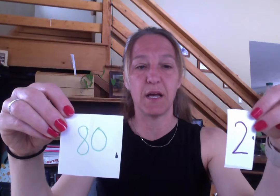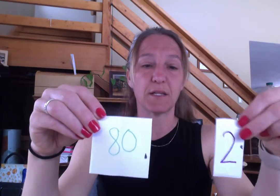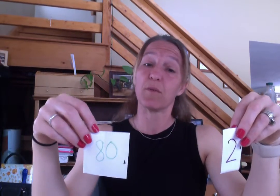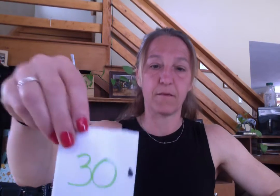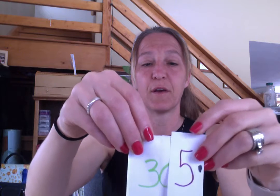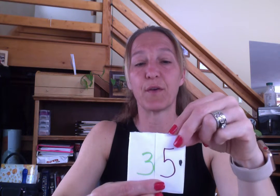Now we're going to put those numbers together — our tens numbers and our single-digit numbers. At school I have these fancy arrow cards; you guys know what those arrow cards are, but I forgot to bring them home. So I'm using paper with dots that I'll line up. We have an 80 and a 2, and that makes 82. We have 30 and 5, which makes the number 35.